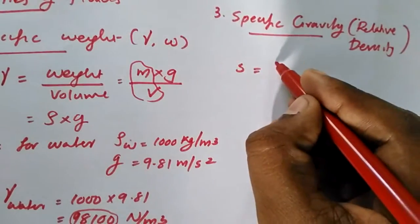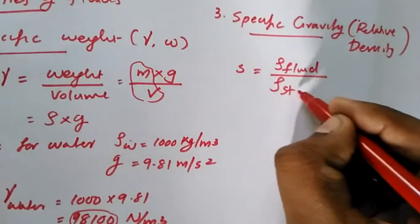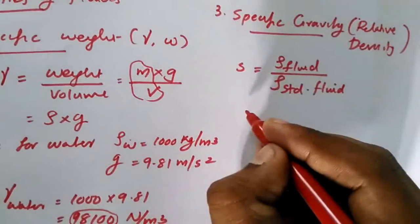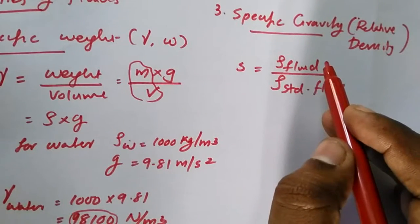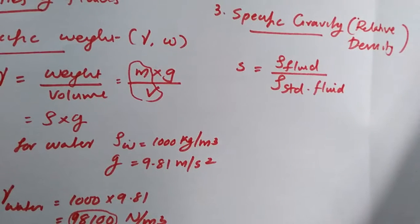What is specific gravity? It is the density of the fluid divided by density of standard fluid. So it is a ratio of density of the fluid and density of a standard fluid.